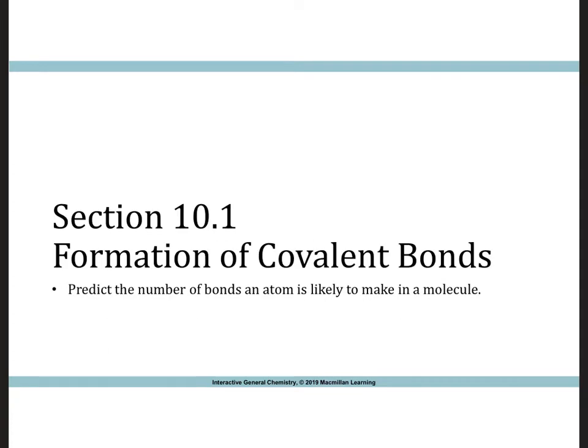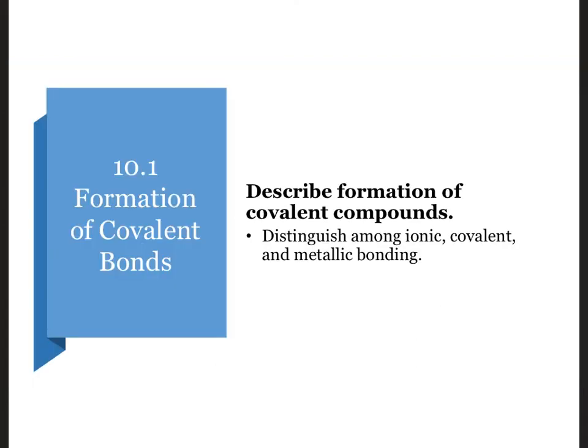In Section 10.1, we'll learn how to predict the number of bonds an atom is likely to make. This lecture complements the previous one about ionic bonding from Section 9.4, so let's begin.